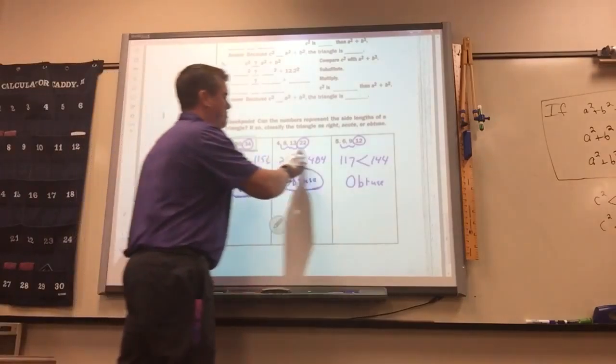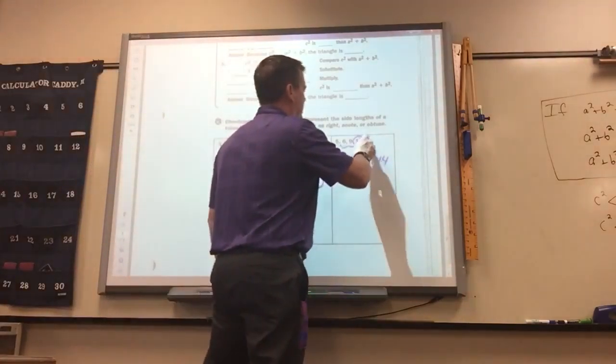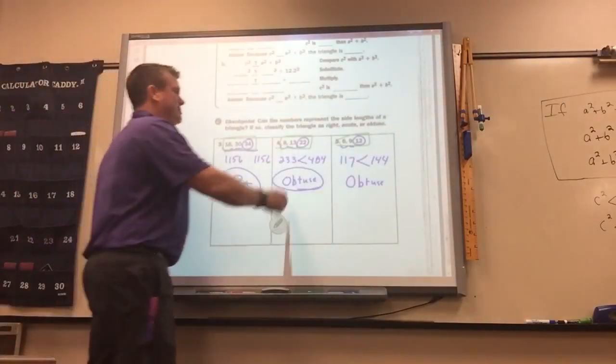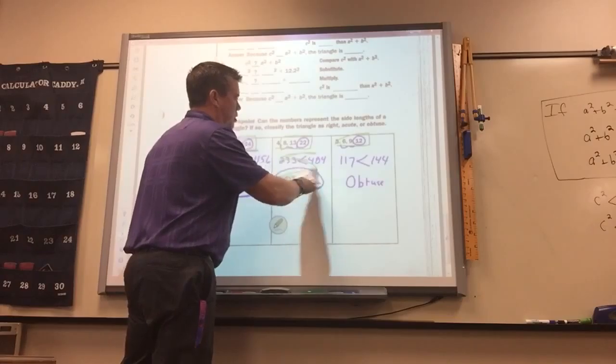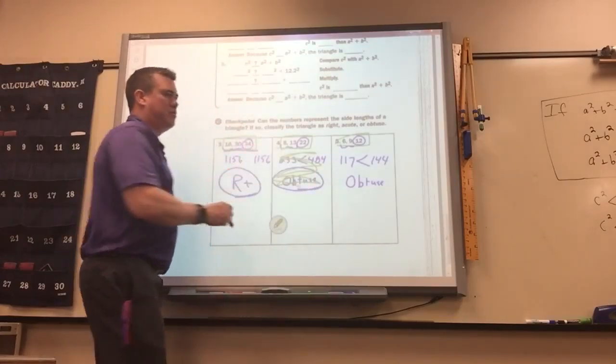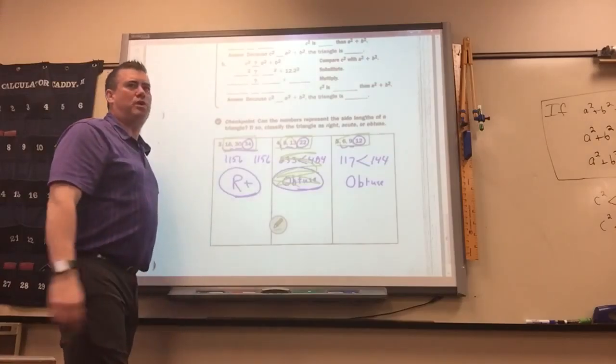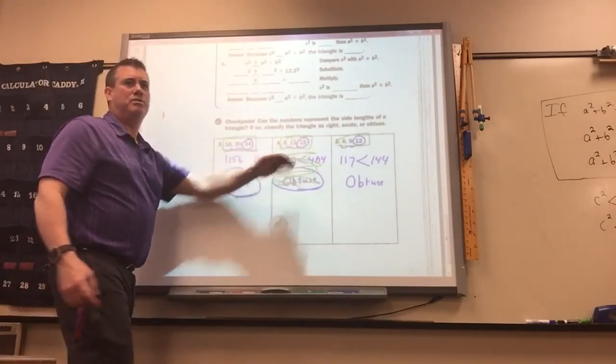This is the one right here. Anyone know why this one won't form? Because they don't add up to more than the. These two sides only add up to 21 and the third side is 22. So if you had a 22-foot board and you put on an 8-foot and a 13-foot, it wouldn't reach.